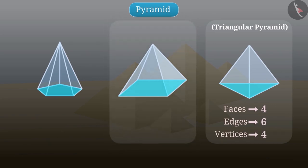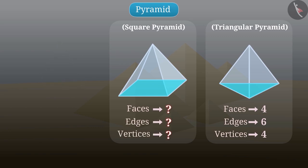Now look at this pyramid. The base of this pyramid is square, so this is a square pyramid. Can you find its face, edges and vertex? Pause the video and try it yourself.